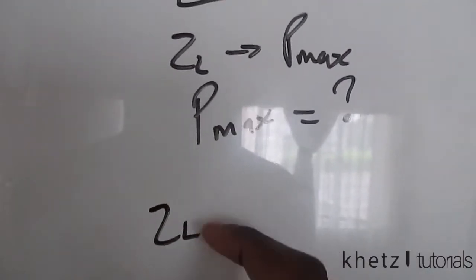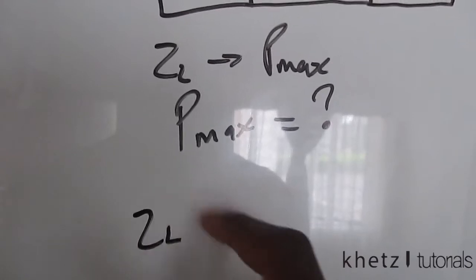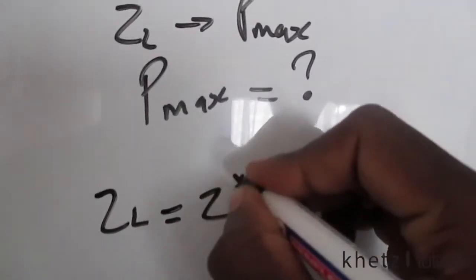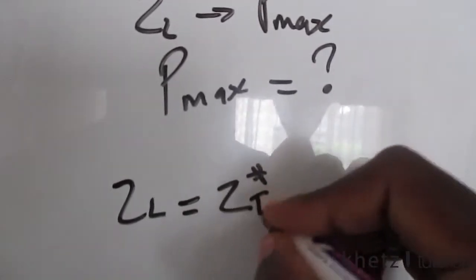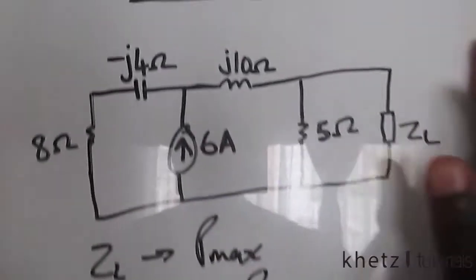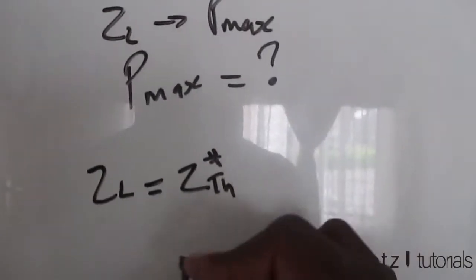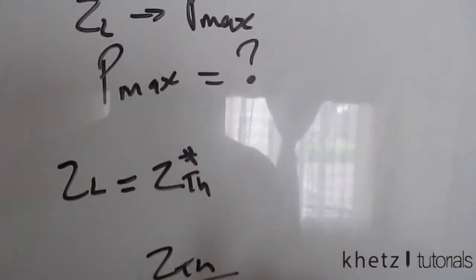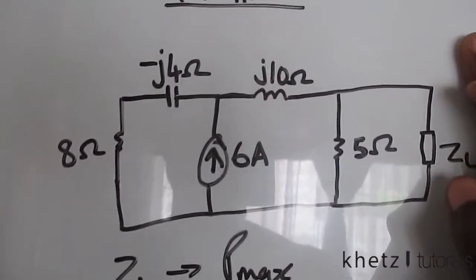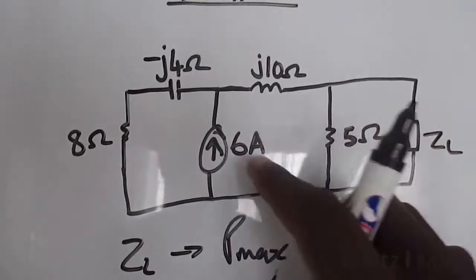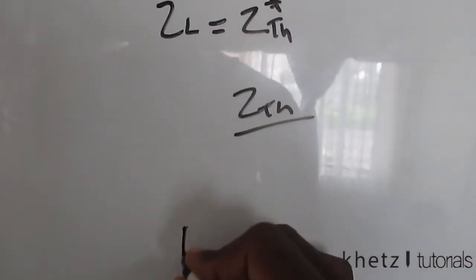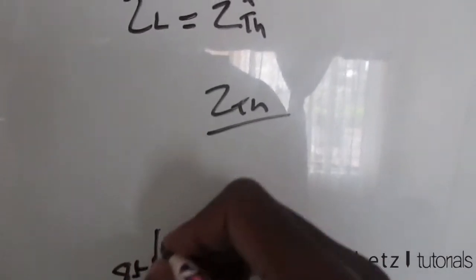For ZL, or for the load to absorb maximum average power, it has to be equal to the conjugate of the Thevenin equivalent impedance. So let's find Zth first so that we can ultimately find its conjugate. To do that we take out all independent sources — we only have one independent source present — so taking that out, you're going to have 8 ohms.